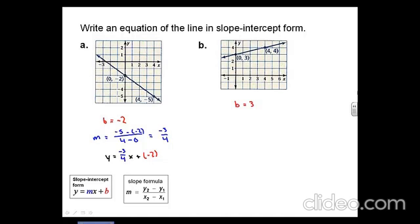To find the slope, again, we plug directly into our formula. So we find our slope to be 4 minus 3, divided by 4 minus 0, which equals 1 quarter. And now we can plug directly into the slope-intercept form for a line. So y equals 1 quarter x plus 3.